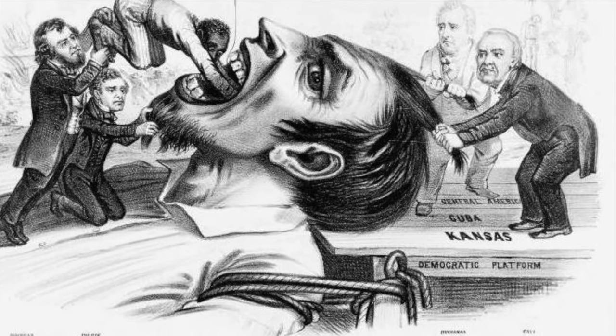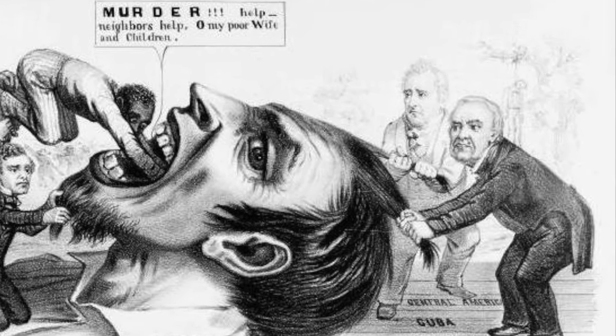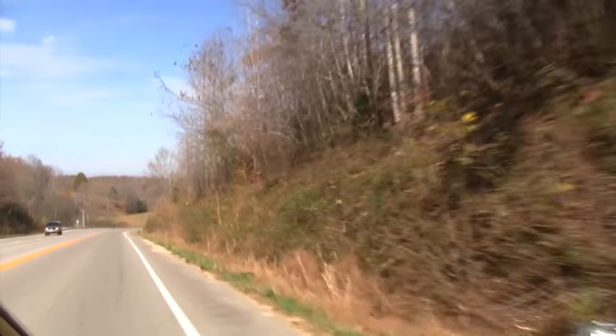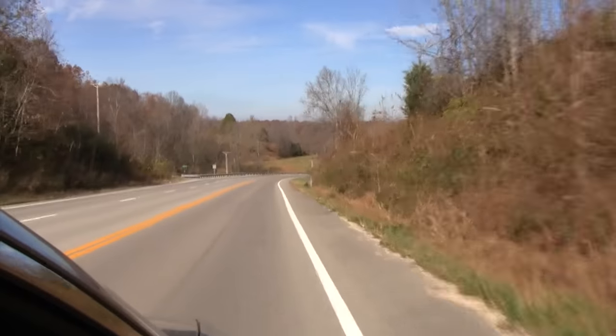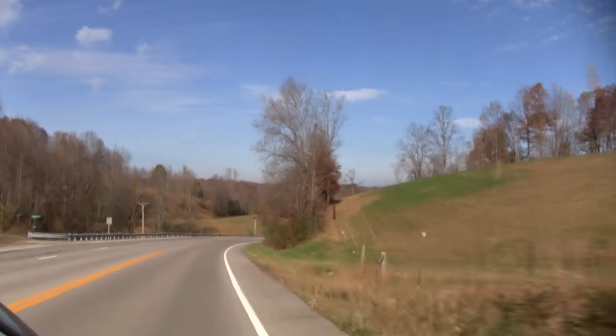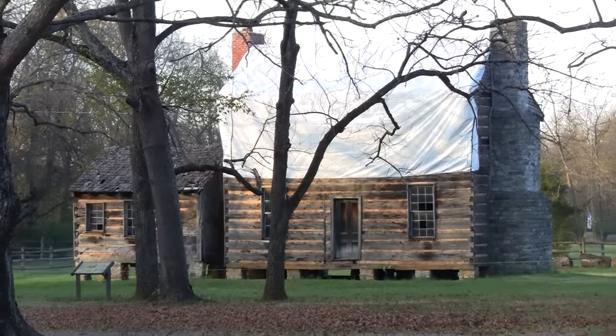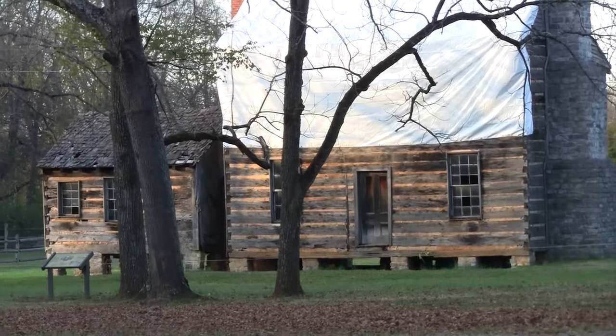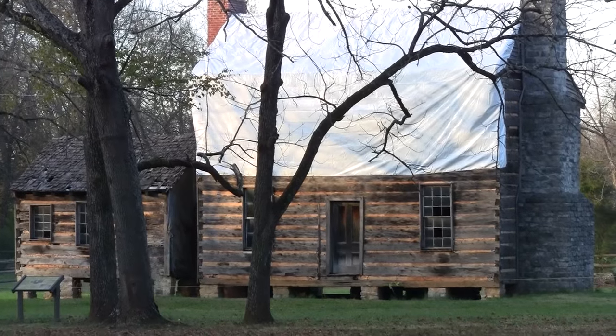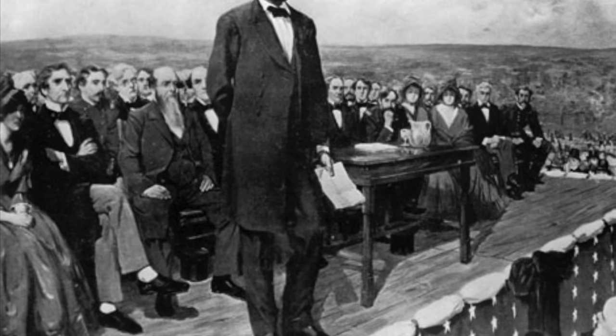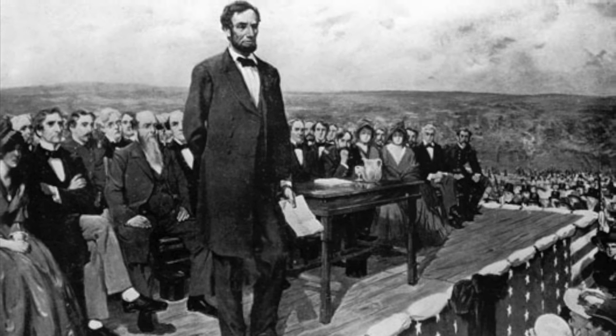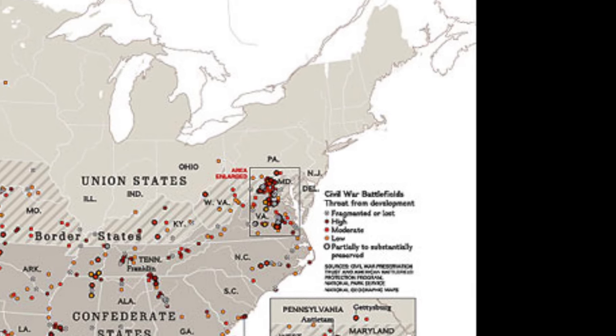The American Civil War was the result of decades of sectional tensions between the north and the south. The roots of the Civil War can be traced to increasing differences between north and south and their growing divergence as the 19th century progressed. Among the issues were the expansion of slavery into western territories, the south's declining political power, states' rights, and the retention of slavery. Though these issues had existed for decades, they exploded in 1860 following the election of Abraham Lincoln, who was against the spread of slavery.